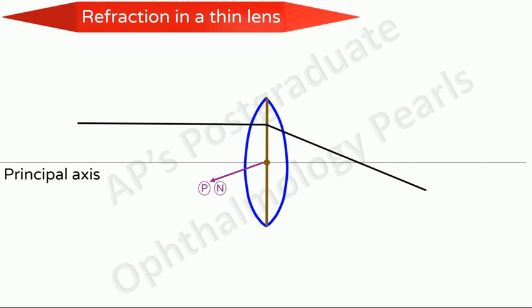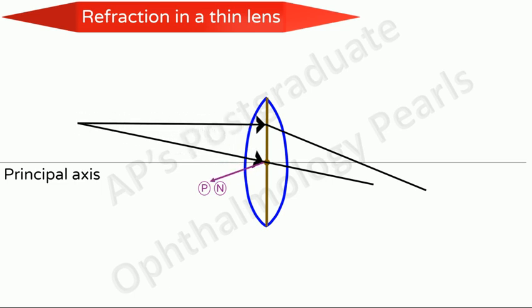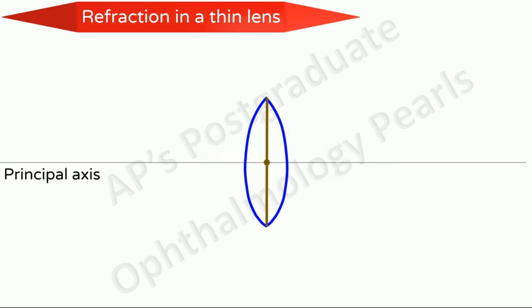Rays of light passing through the nodal point are undeviated. To understand further, you must understand that in ray diagrams, the rays of light from the object are always shown as coming from the left and striking the lens.